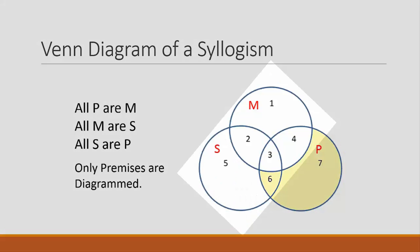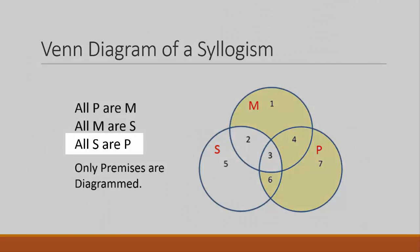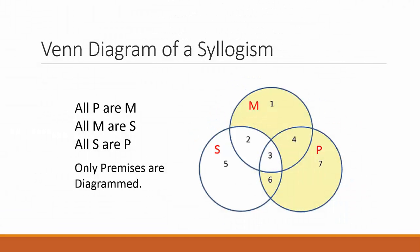Now let's diagram the second claim: all M are S. Areas 1 and 4 are shaded to indicate that part of the diagram doesn't have anything in it. Just areas 2 and 3 remain, indicating that these are the only areas of M that remain. Now that we've diagrammed the two premises, we can check the validity of the conclusion — we just need to see if the conclusion is consistent with the resulting diagram. It isn't. The conclusion says that all of the S category belongs to the P category, but there are two areas of the S category outside of P — areas 2 and 5 — so the syllogism is invalid.